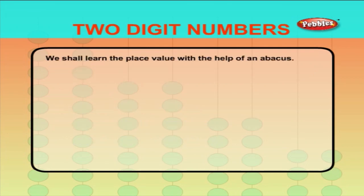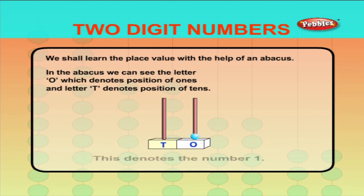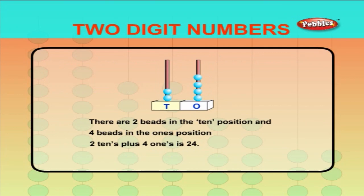We shall learn the place value with the help of an abacus. In the abacus, we can see the letter O, which denotes position of ones, and letter T, which denotes position of tens. In the given figure, there is only one bead in the ones position. This denotes the number one. In this figure, there are two beads in the tens position and four beads in the ones position. Two tens plus four ones is 24.